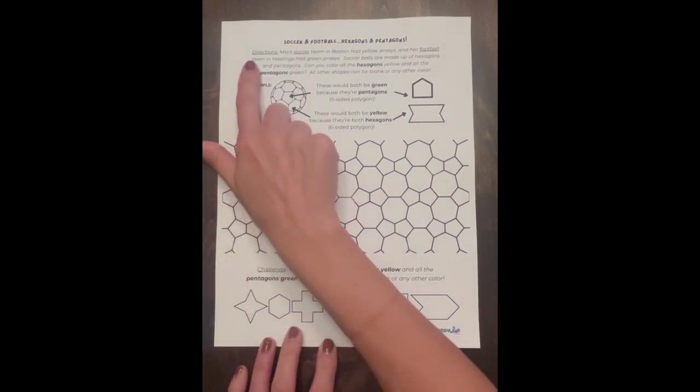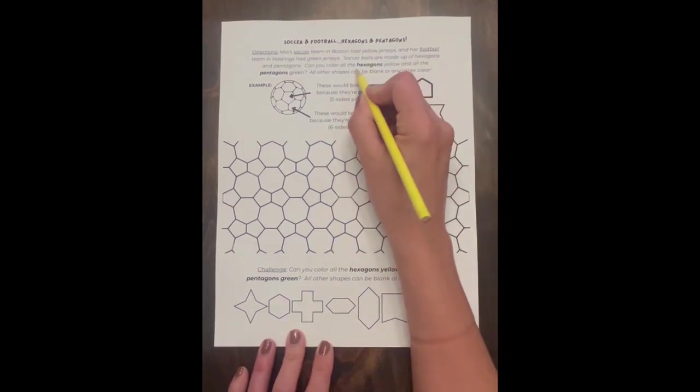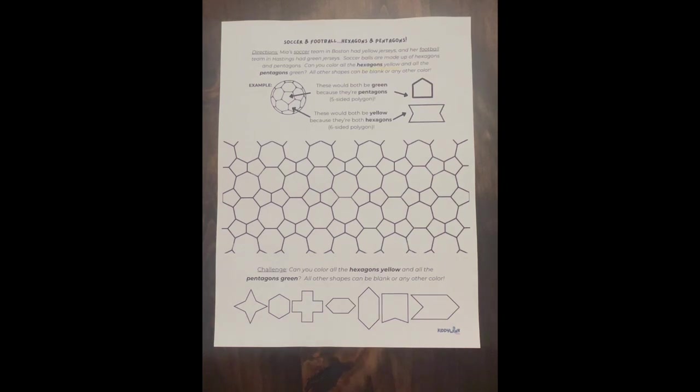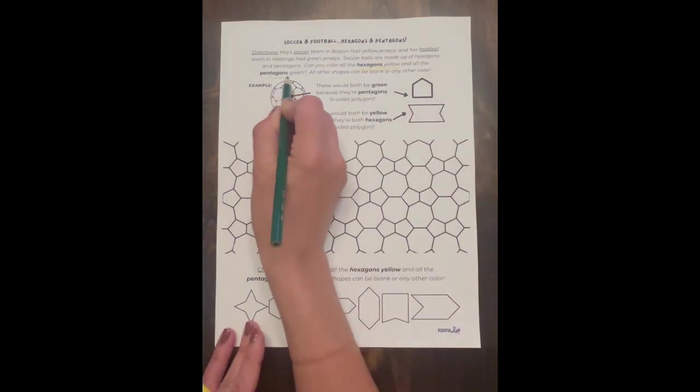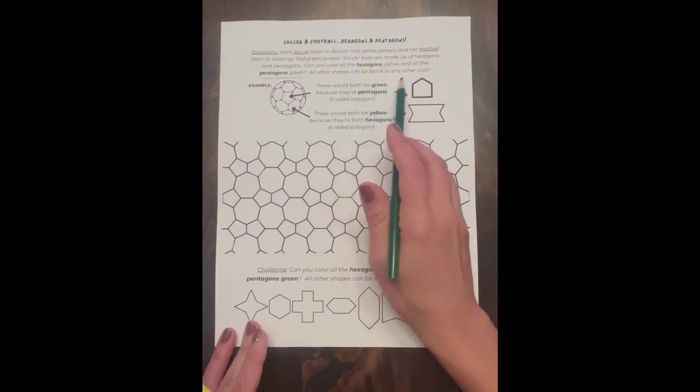So first let's read the directions. Mia's soccer team in Boston had yellow jerseys and her football team in Hastings had green jerseys. Soccer balls are made up of hexagons and pentagons. Can you color all the hexagons yellow? So hexagons yellow, that's important, and all the pentagons green. All other shapes can be blank or any other color.